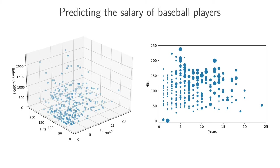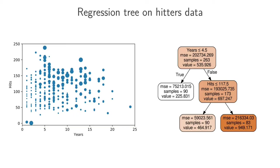Let's see what happens if we fit a regression tree to this dataset. In the top node of the tree we ask: is the number of years this player has been playing less than 4.5? That threshold of 4.5 is marked on the plot. If that is true, we end up in the left leaf node, which corresponds to the region where years is less than 4.5, and we predict that the player earns 225.831 thousand dollars a year.